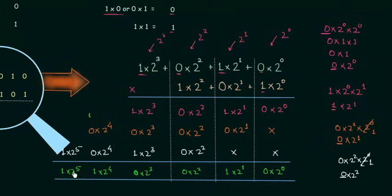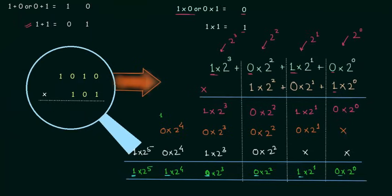This is the result of the multiplication. Neglecting the weights and writing down the coefficients only, we have: 1, 1, 0, 0, 1, 0. So this is our answer.